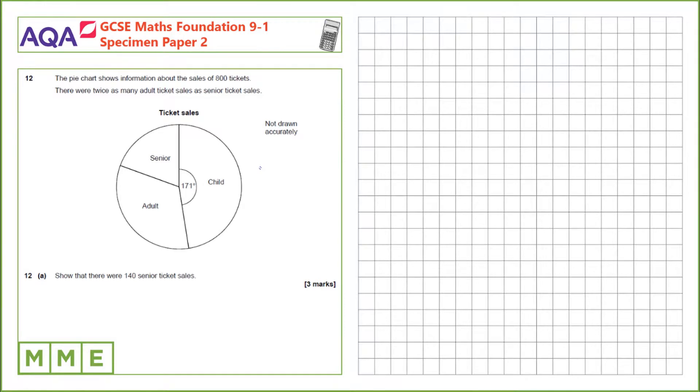Question 12. The pie chart shows information about the sales of 800 tickets. There were twice as many adult ticket sales as senior ticket sales. Show that there were 140 senior ticket sales.